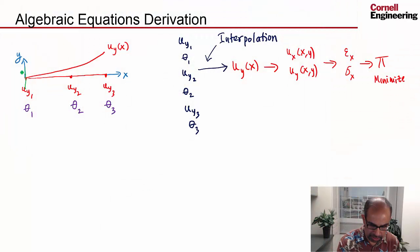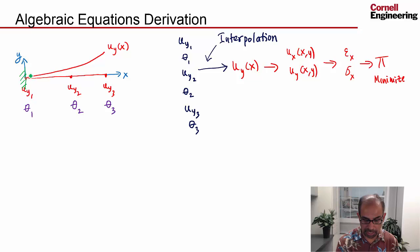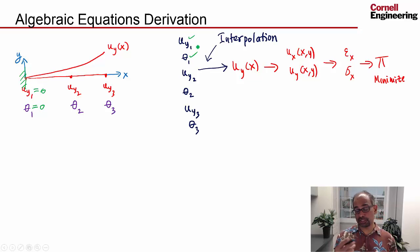We saw that we have three displacements and three rotations to determine such that the potential energy of the beam is minimized. The first step, as we saw in the big ideas in finite element analysis, is to apply the essential boundary conditions. In this case, our essential boundary condition is that this end is fixed, which means that the point on the midline cannot move, so that's zero, and also the cross-section cannot rotate. So these two can be determined readily from the essential boundary conditions.